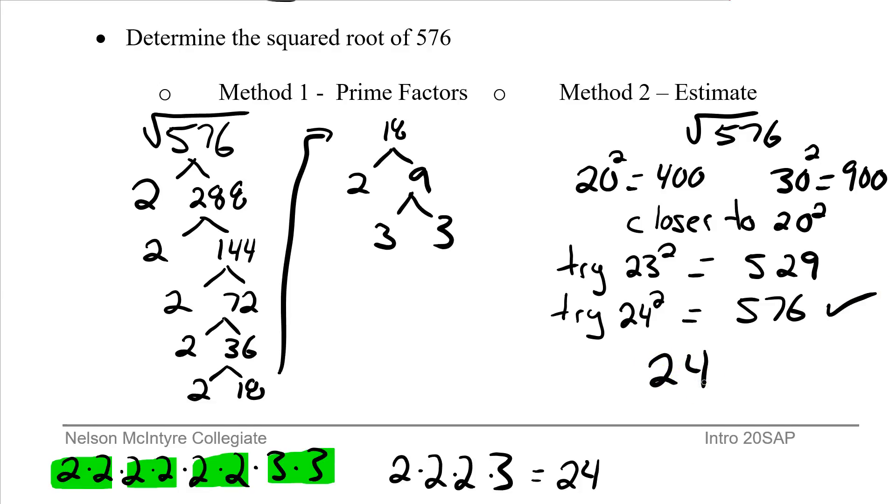So in the estimating method, I find the 10 base that is closest to the number I'm looking for, and then it's just guess and check. Try 23, try 24, see what we get. Prime factors gives it to me right away, final answer 24. Estimating, I may try 1, may try 2, may try 3, but eventually I will get to 24.